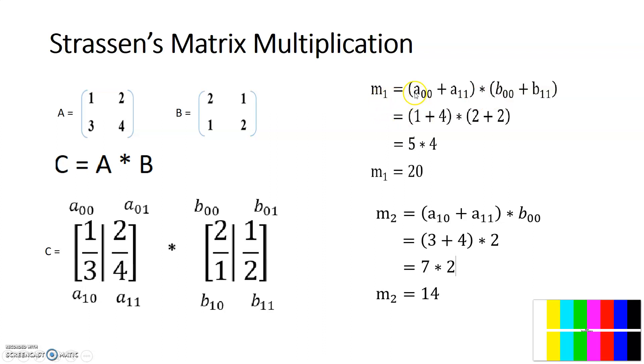The equation is A00 plus A11 into B00 plus B11. A00 means value is 1 plus A11 value is 4. B00 value is 2, B11 value is 2. So now you substitute those values here and you calculate. You will get 1 plus 4 is 5, and 2 plus 2 is 4. 5 into 4 is 20. So M1 value is 20 now.